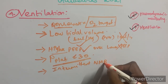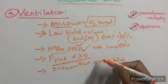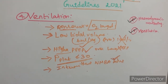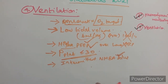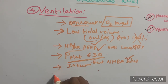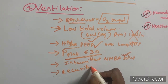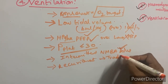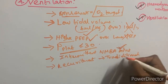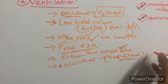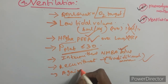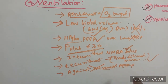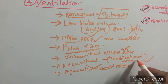Intermittent neuromuscular blocking agent boluses should be used rather than continuous infusion. Regarding recruitment maneuvers, traditional maneuvers such as CPAP at 30–40 cmH2O for 30–40 seconds are acceptable. However, incremental PEEP strategy should not be used, as it was associated with increased 28-day mortality.